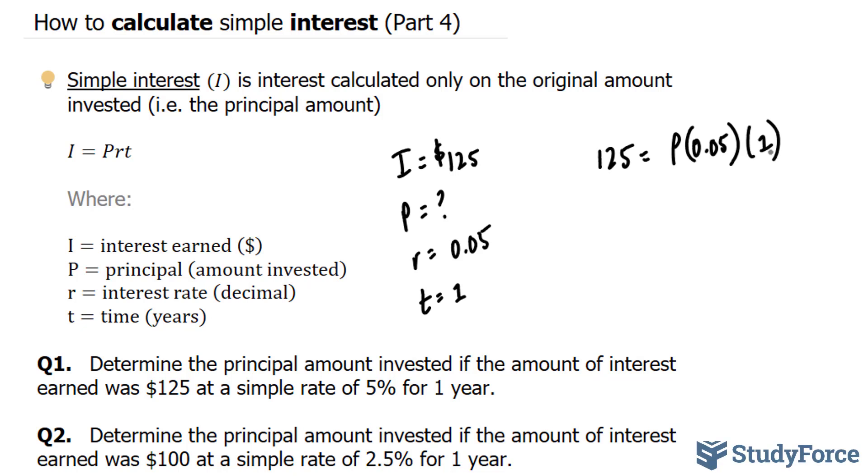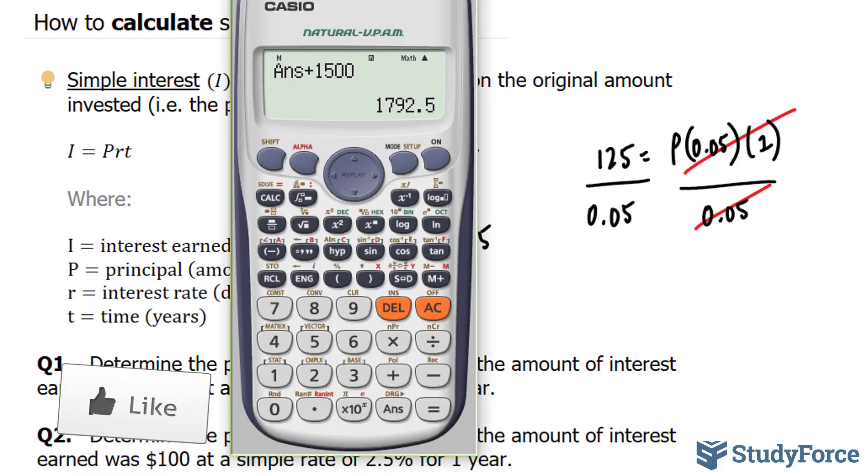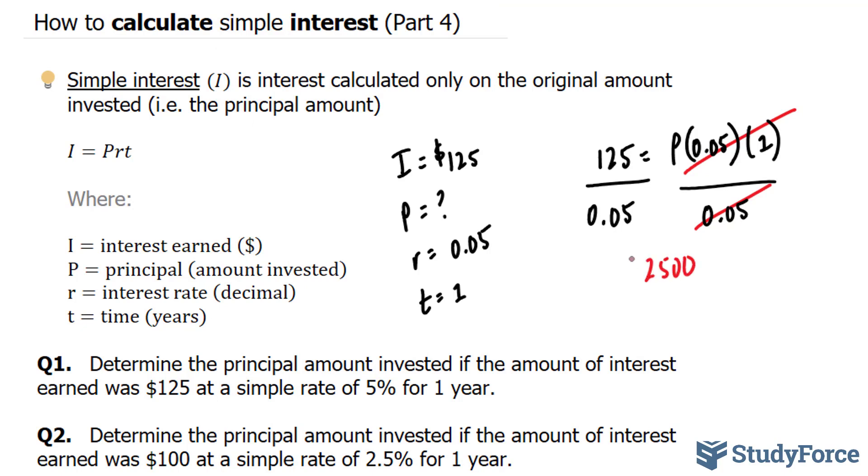So this has essentially become a very simple algebraic problem. All we have to do is solve for p. Now on the right side, it's pretty easy, 0.05 times 1 is 0.05. So I'm going to divide both sides by 0.05, and look what happens. Dividing this side and this side, watch. This cancels out, and we're left with 125 divided by 0.05 gives us $2,500 initially invested by this person.